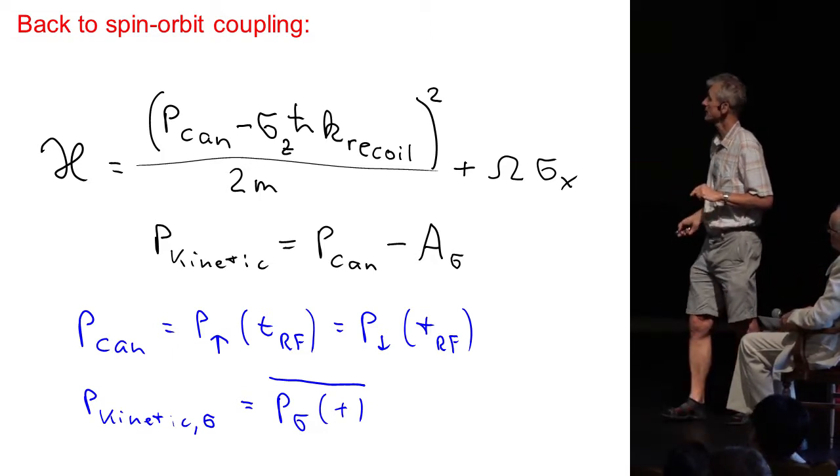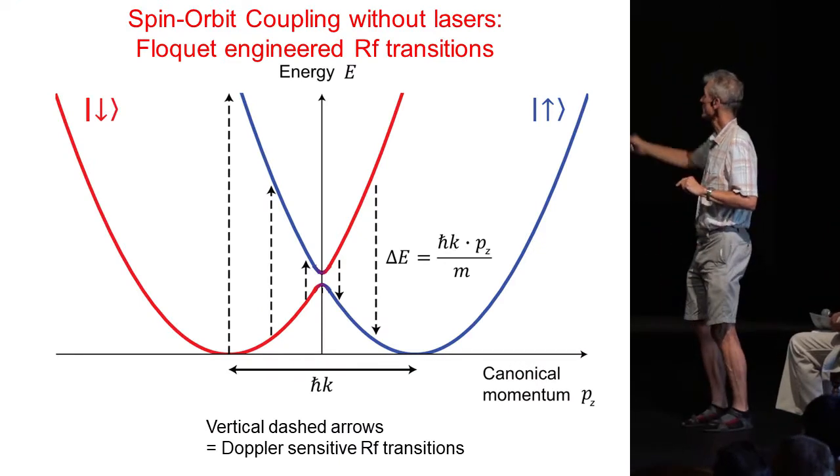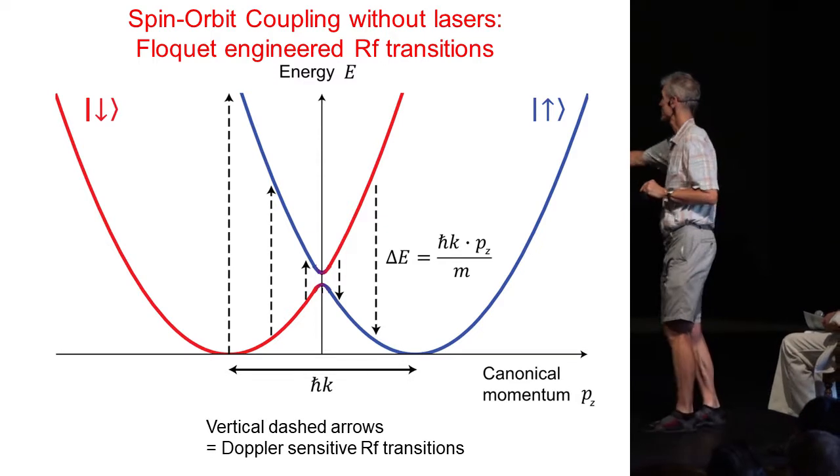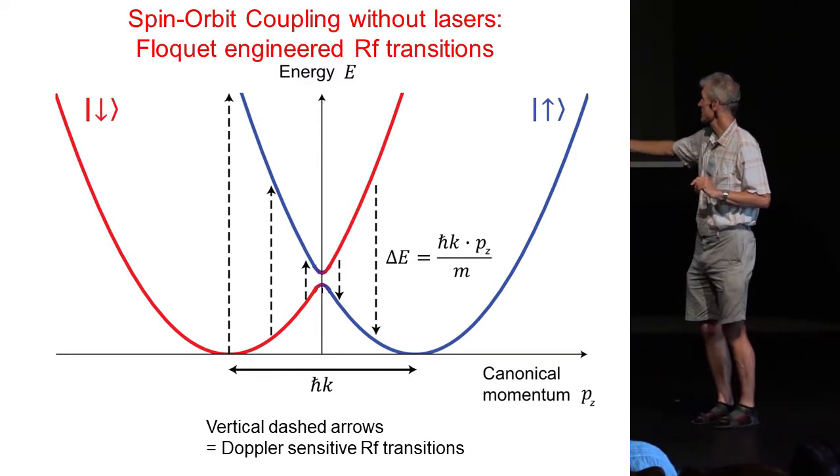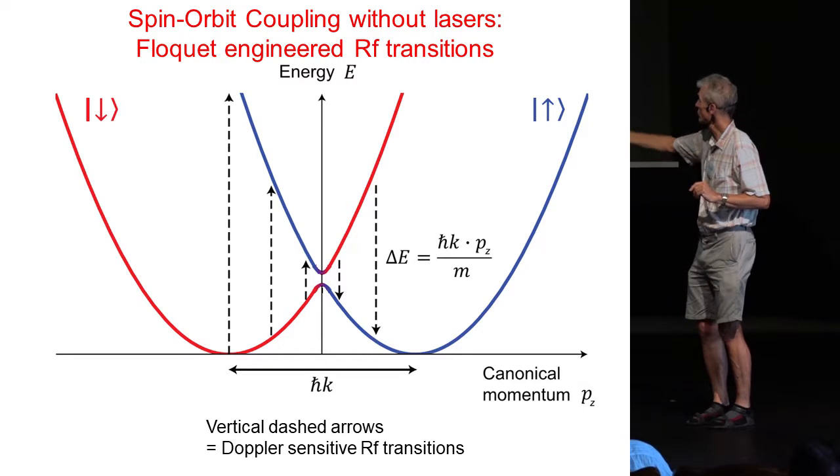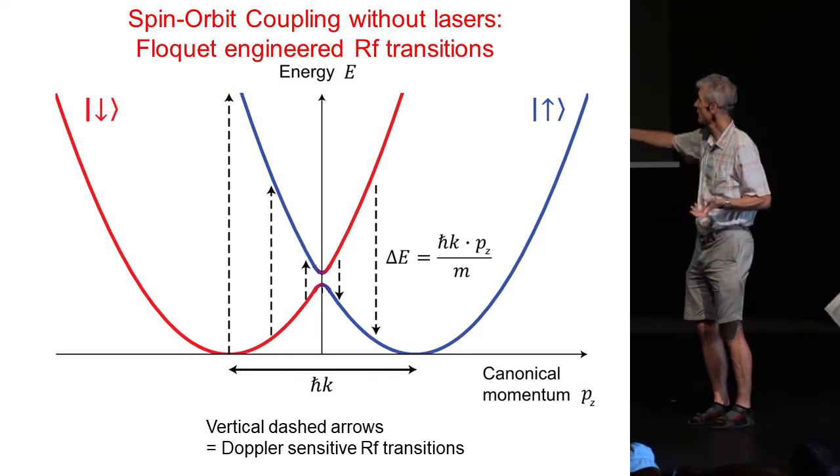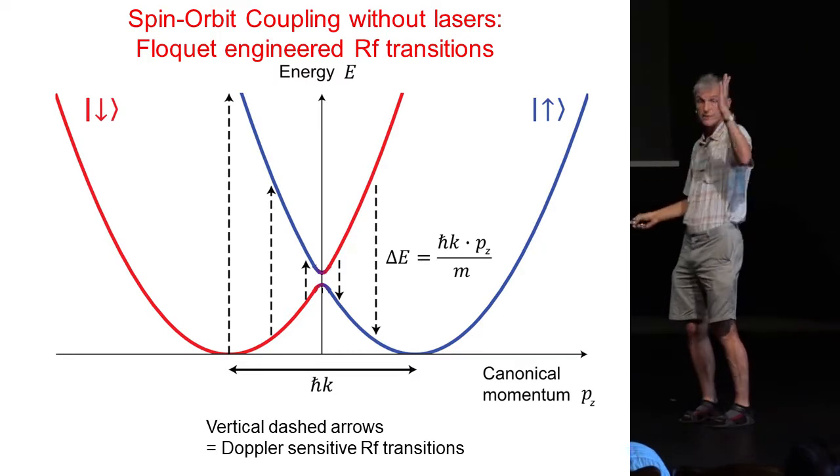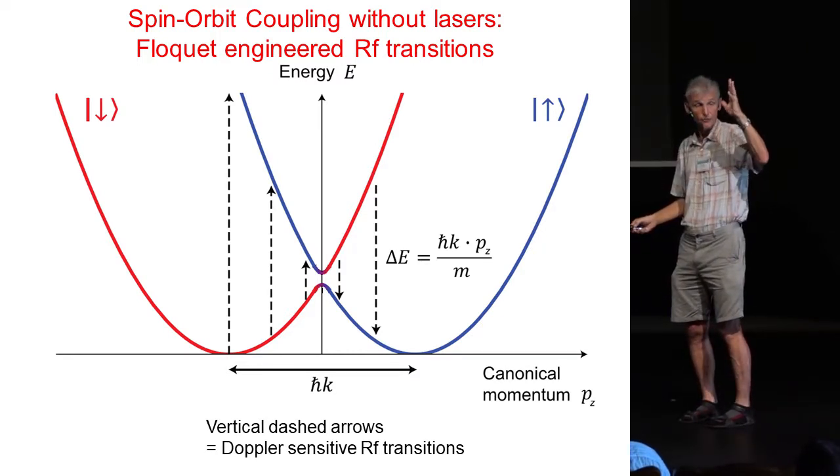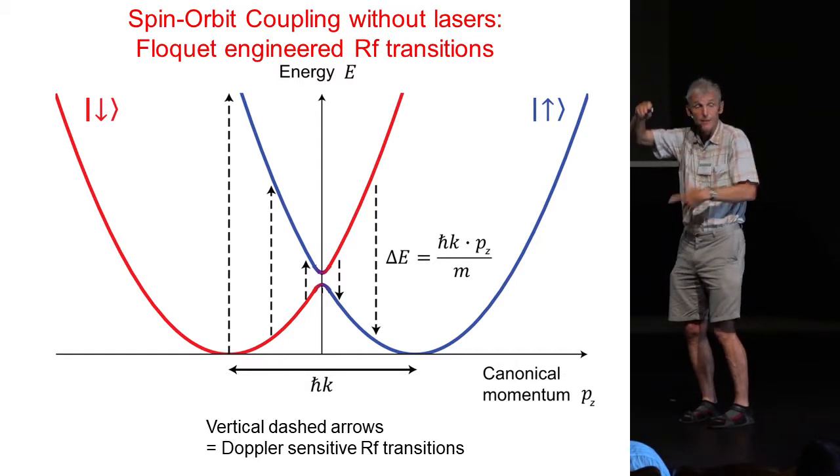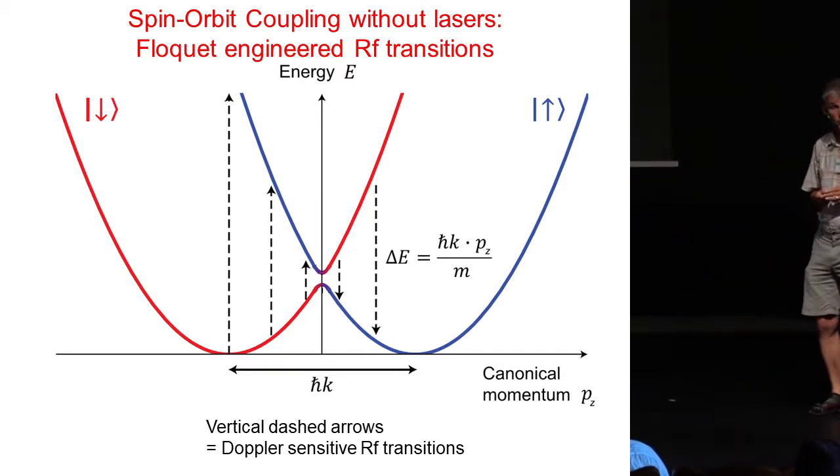So, if I introduce the canonical momentum as the momentary momentum at the RF transfer, we can now plot the energy versus momentum in this way. And in this diagram, which is the standard diagram for spin-orbit coupling, because it's plotted versus canonical momentum, all the RF transitions are now vertical. And if you look at those dashed arrows, these are the different vertical RF transitions. Those arrows have different lengths, but this is just the Doppler shift I was talking about.